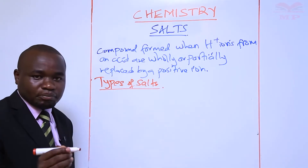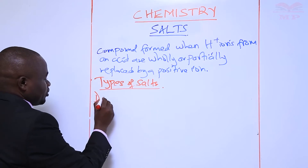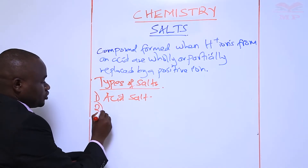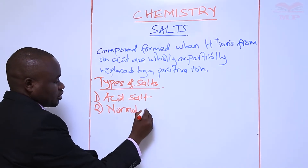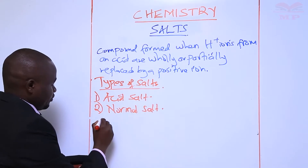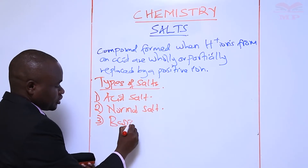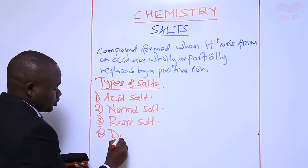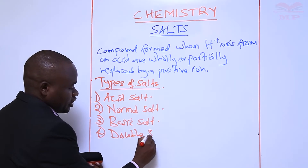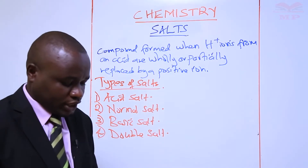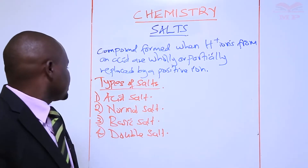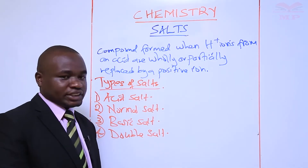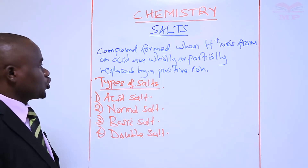The four types of salts are: number one, acid salt; number two, normal salt; number three, basic salt; and number four, double salt. So we have four types of salts — acid, normal, basic, and double salt. Let us see what is the meaning of each type of salt.